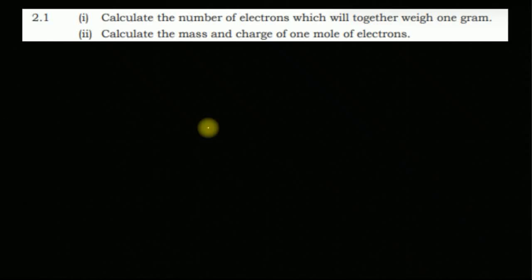Hello everyone, welcome back. In today's video we're going to do the first question from the exercise on Structure of Atom from Class 11. The first question is: calculate the number of electrons which will weigh one gram. So what we have to find out is, if we have one gram, how many electrons can we have in it?